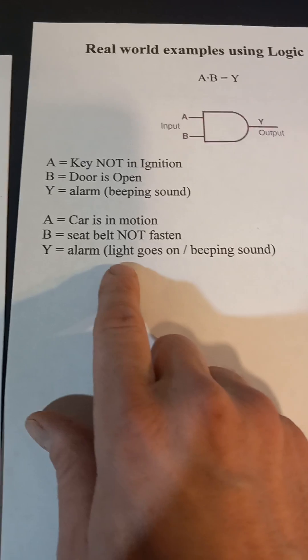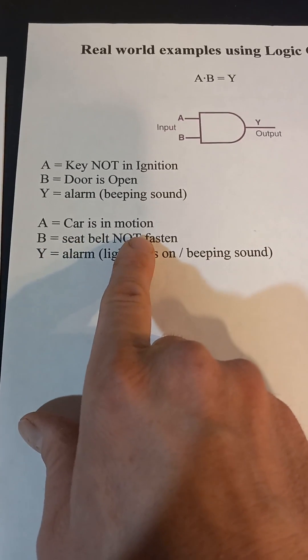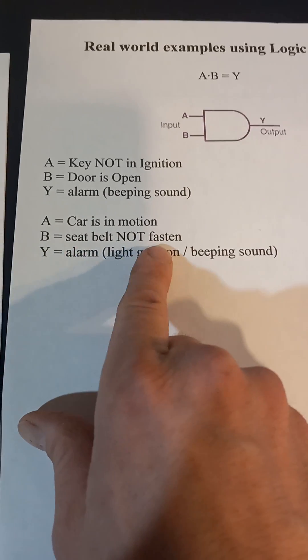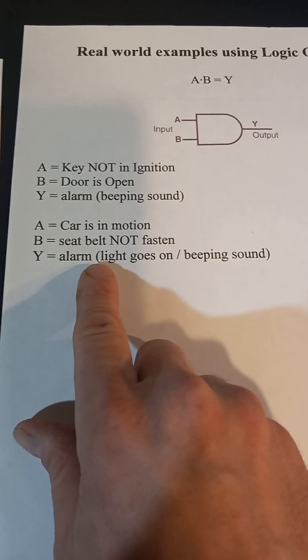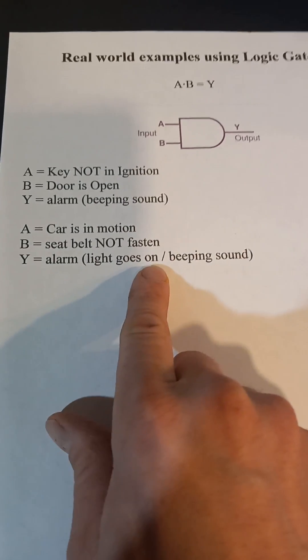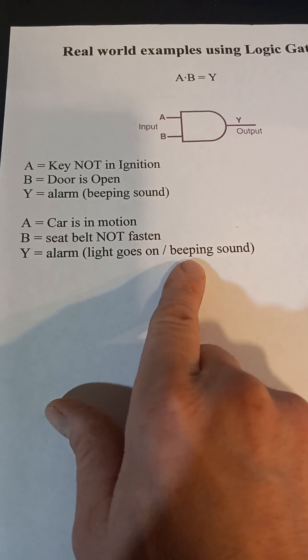Another one is your car's in motion and your seatbelt's not fasten, then you get the alarm. The seatbelt alarm goes off, either a light or a beeping noise.